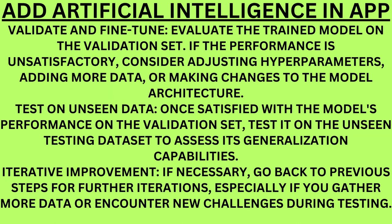Visualize these metrics over epochs to assess the model's learning progress. Validate and fine-tune. Evaluate the trained model on the validation set. If the performance is unsatisfactory, consider adjusting hyperparameters, adding more data, or making changes to the model architecture. Test on unseen data. Once satisfied with the model's performance on the validation set, test it on the unseen testing dataset to assess its generalization capabilities. If necessary, go back to previous steps for further iterations, especially if you gather more data or encounter new challenges during testing.